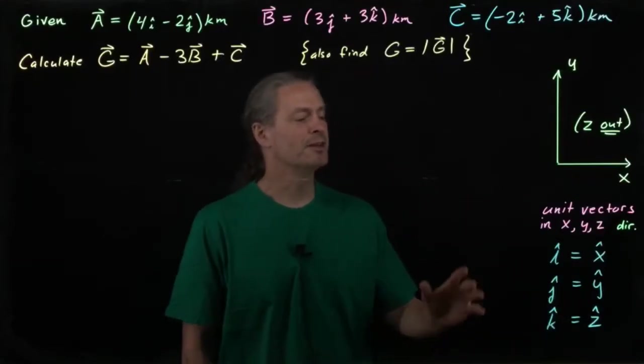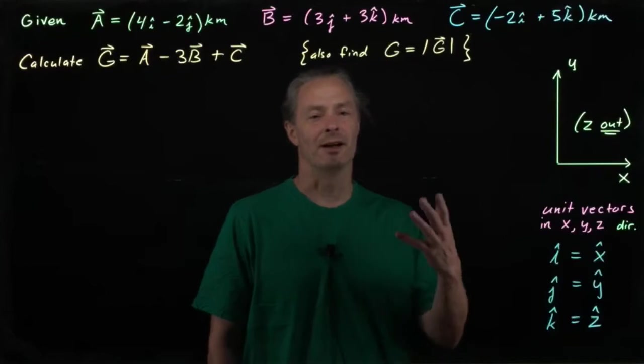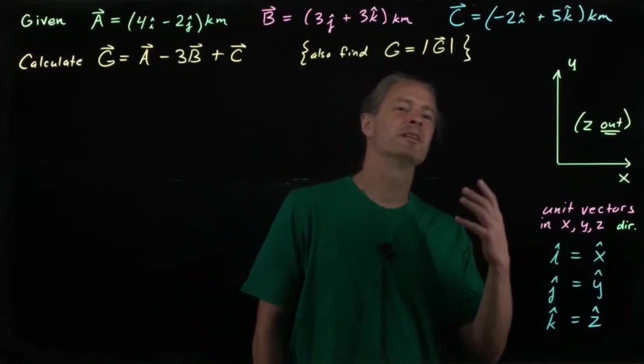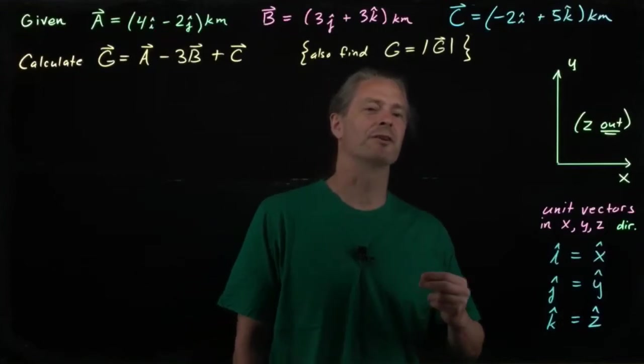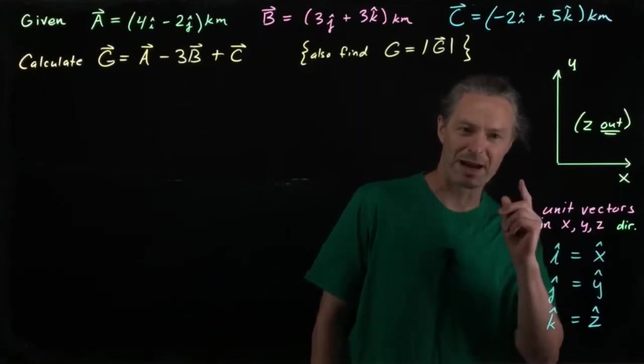Just as a reminder, these are unit vectors. Now, that doesn't mean they have units. In fact, it means they don't have units. The characteristic aspect of a unit vector is that it is a vector of magnitude 1.